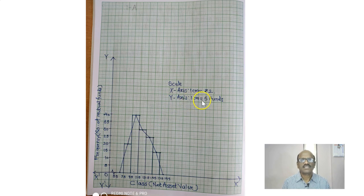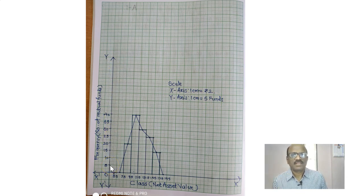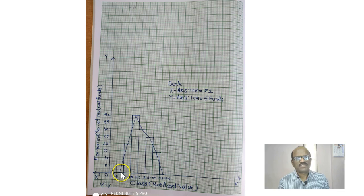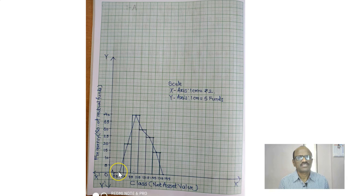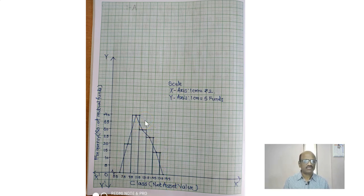The scale on the y-axis is 1 cm equals 5. The number of funds goes 5, 10, 15, and so on. For the first class the frequency is 0, for the second the frequency is 20, and so on. First of all, we draw the histogram. After drawing the histogram, the first class is 5.5 to 7.5 with frequency 0. Taking these midpoints, and the last interval 17.5 to 19.5, join them using the scale and you will get the frequency polygon with the help of the points.